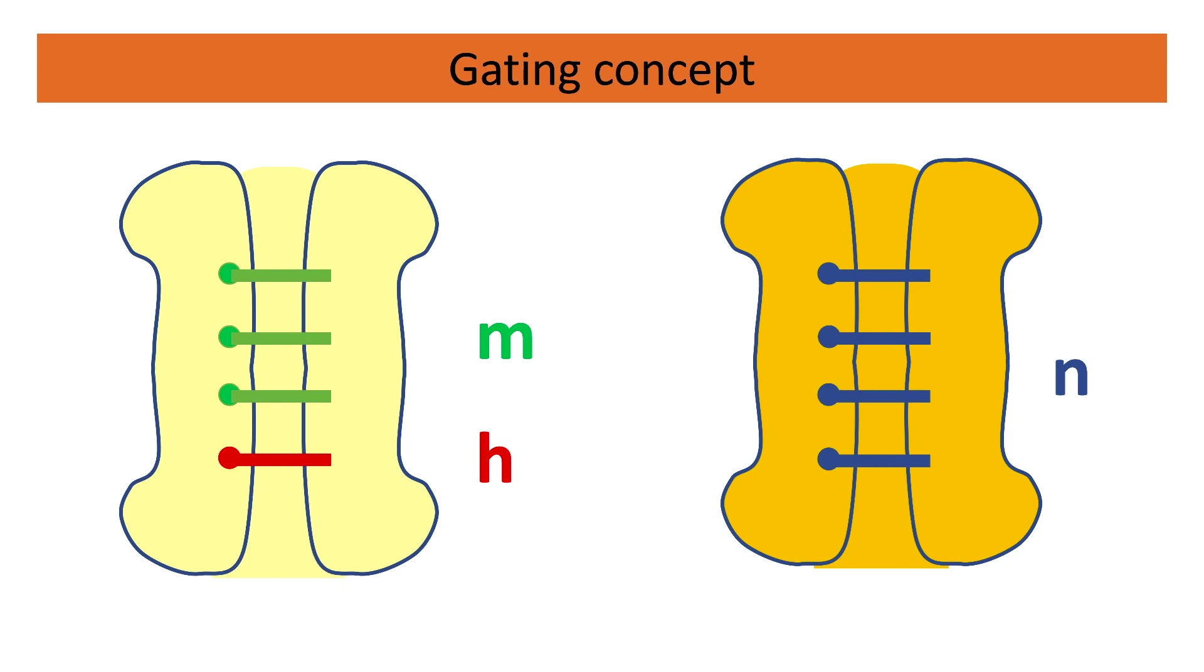While the M gates are activation gates, since they're closed in the beginning but then open, the N gates are also activation gates, and four N gates describe the potassium channel.